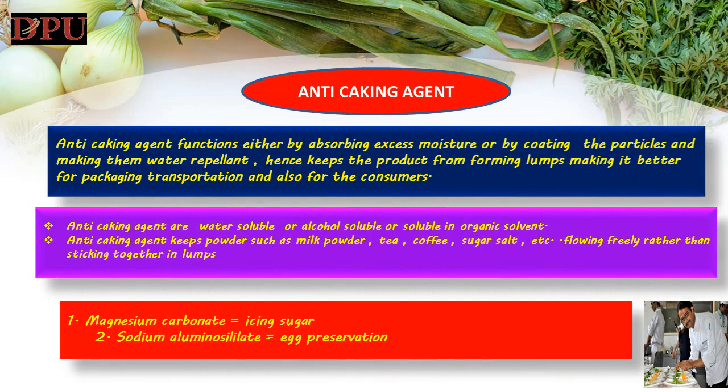Anti-caking agents function either by absorbing excess moisture or by coating the particles and making them water-repellent, hence keeping the product away from forming lumps, making it better for packaging, transportation and also for the consumers. Examples: 1. Magnesium carbonate, used in icing sugar. 2. Sodium aluminosilicate, used in egg preservation. 3. Magnesium trisilicate, used in oil. 4. Bentonite, used in wine.